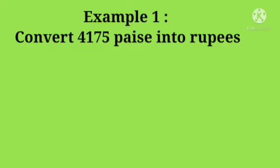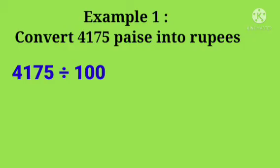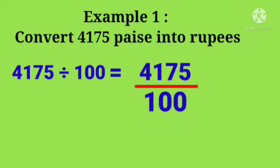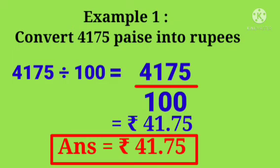Example 1: Convert 4175 paise into rupees. 4175 divide by 100. Now shift the decimal point two places to the left, equal to rupees 41.75. So 4175 paise equals to rupees 41.75.